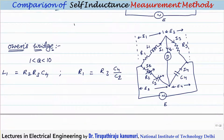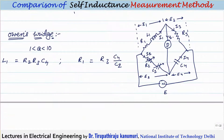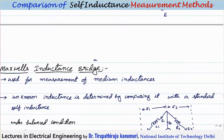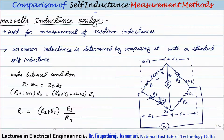The Owens bridge is used for medium values of Q. Ideally it can be used for any Q value, but practically it is limited to Q between 1 and 10. We will now see these bridges in detail, then cover their advantages, disadvantages, and conclusions.